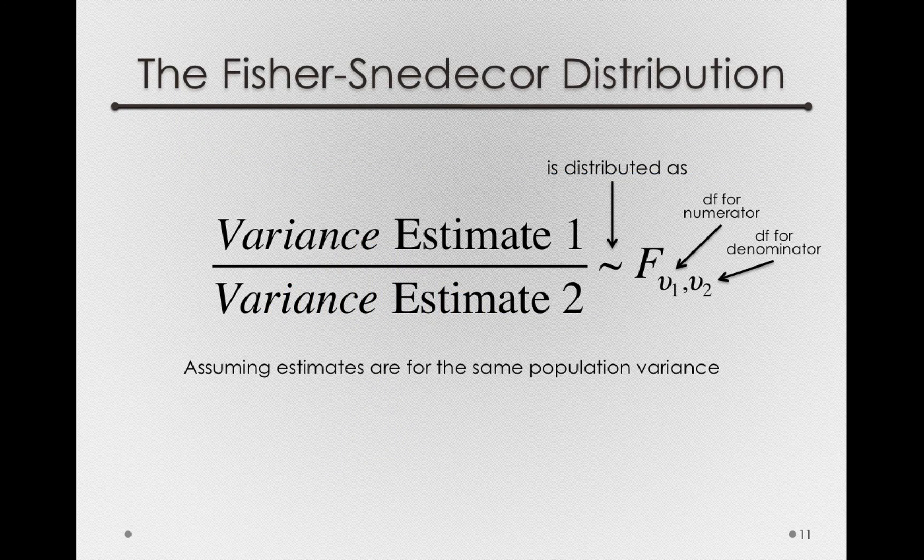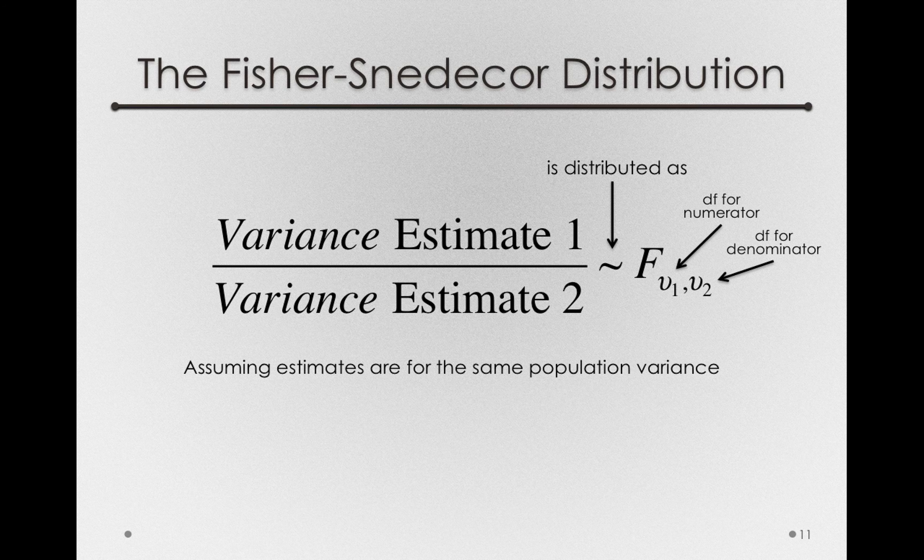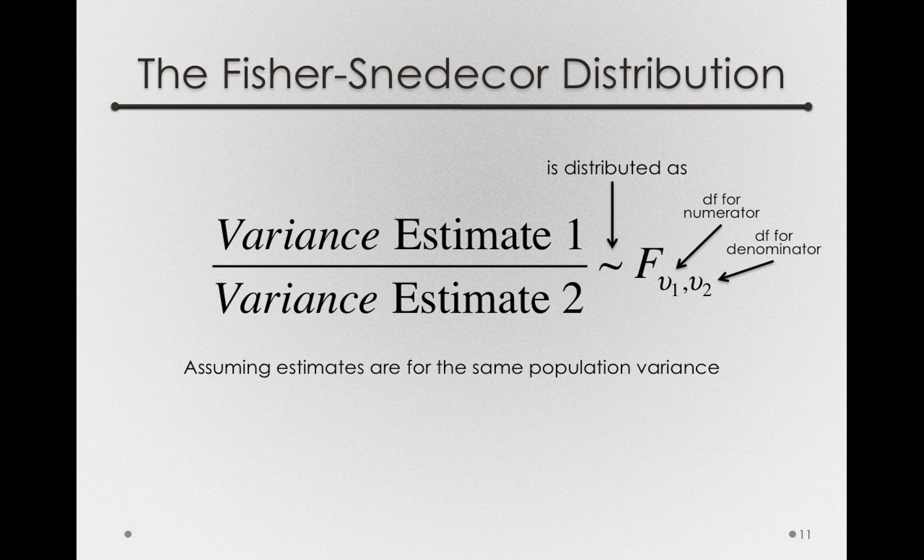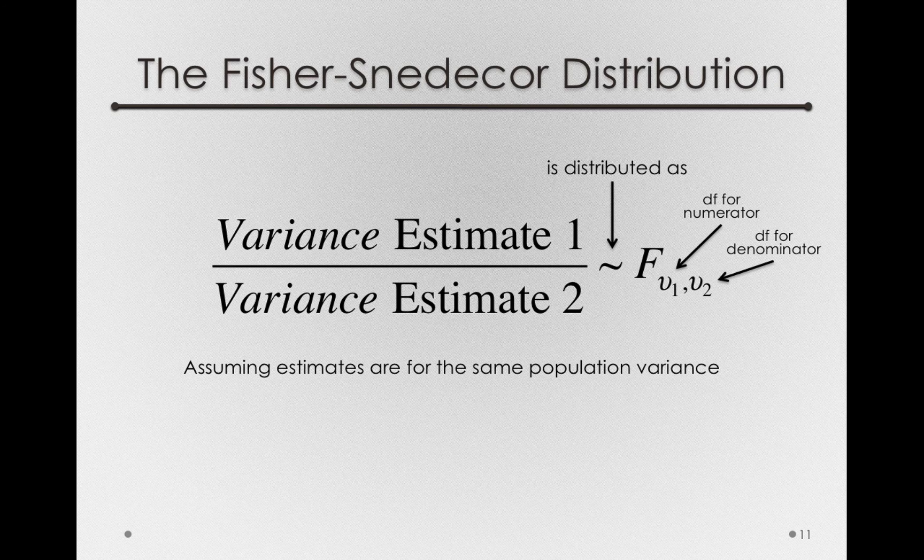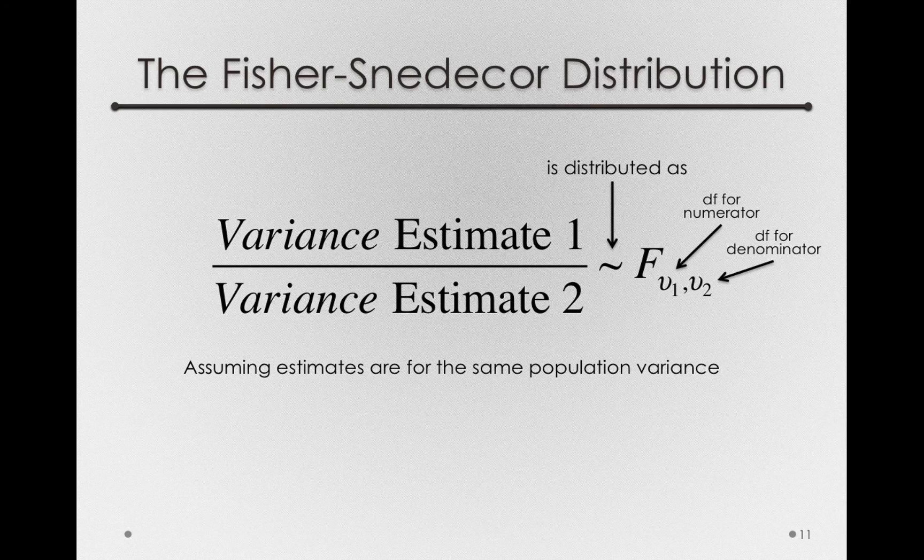So again, the Fischer-Snedecor distribution is simply what would occur in nature if we were to take from the same population a variance estimate on the top divided by another variance estimate on the bottom. As long as we're estimating the same population variance with these two separate samples, then we'll get a distribution that has the F shape.